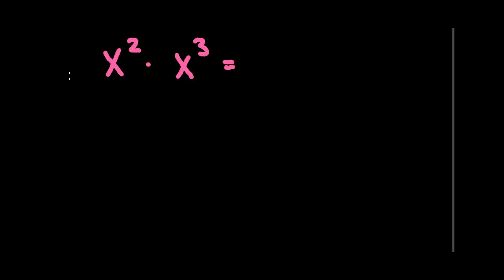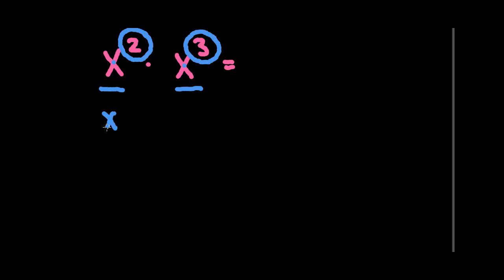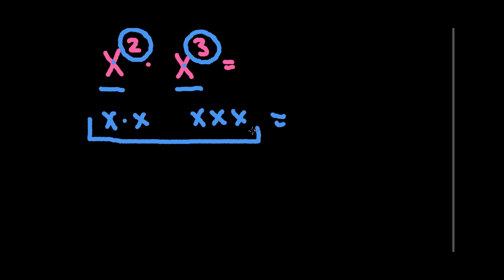Now let's talk about what happens when we have variables and multiply them with exponents. If we have x squared times x to the third, each has its own base. The exponent 2 means there are two x's and the exponent 3 means there are three x's. If we combine them all together, we're using the same multiplication operation, so this simply becomes x to the fifth.